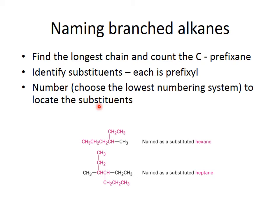Next, number your carbons to locate the substituents. You can count from either end of the chain. I could count from one end and get four, or from the other end and get three. I choose the system that gives the lowest set of numbers for the substituents. So for one example, I would name it 3-methylhexane. For another, counting from one end gives substituents at three and four, from the other gives four and five — three and four is lower, so I choose that. Then I put substituents in alphabetical order, giving 4-ethyl-3-methylheptane.